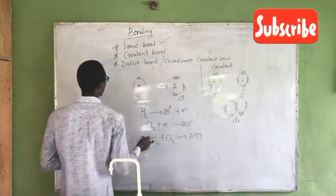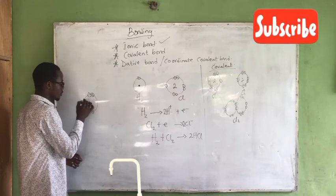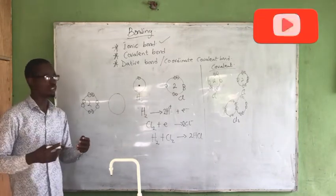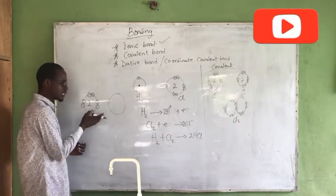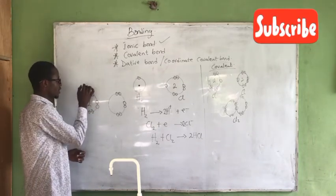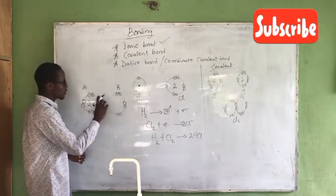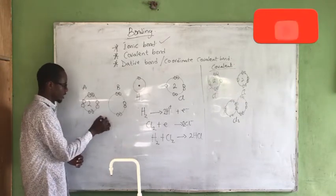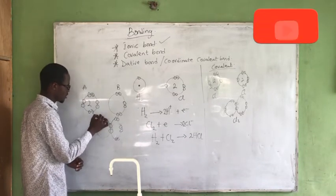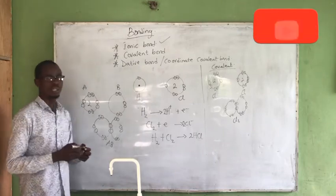Let me give an example of the dative bond. Suppose we have an element — atom A — that has already completed its octet configuration. Then we have another element — atom B. Atom A can share its own lone pair of electrons with atom B so that they combine to form a molecule AB. That kind of bond, where one atom donates both electrons of the bonding pair, is what we call the dative bond.